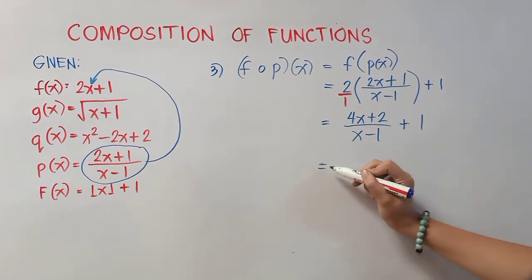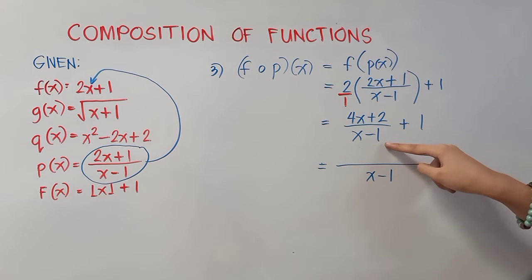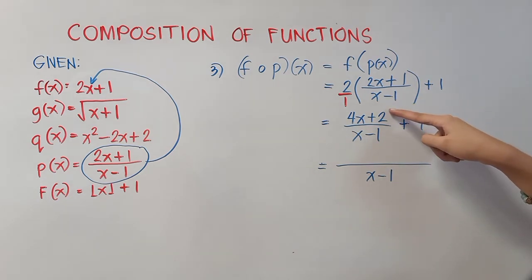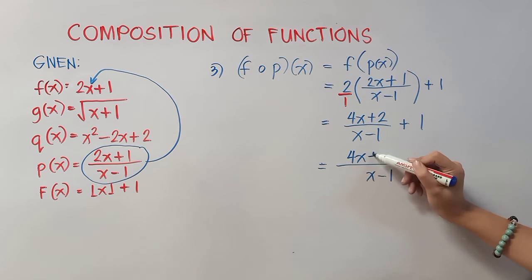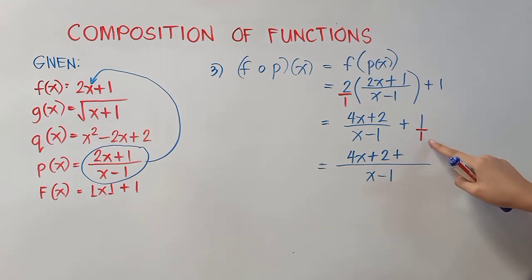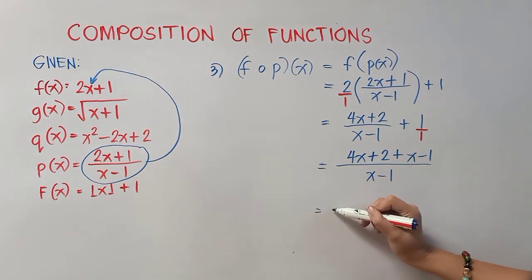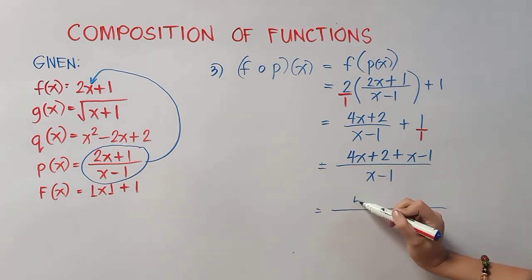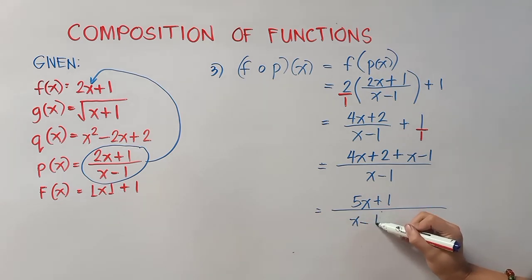Since this is addition of fractions, our LCD is x minus 1. Our LCD shall be divided by our denominator, and the answer shall be multiplied by our numerator. So x minus 1 divided by x minus 1 is 1, times our numerator, so we write 4x plus 2. Then 1 has a denominator of 1, so x minus 1 divided by 1 is itself, giving x minus 1. Combining like terms: 4x plus 1x is 5x, and 2 minus 1 is positive 1, all over x minus 1. That is our final answer.